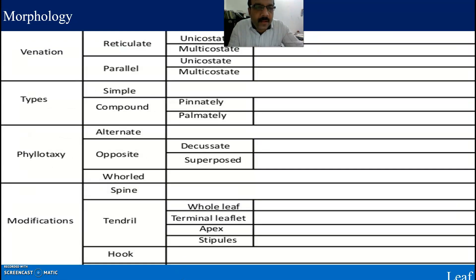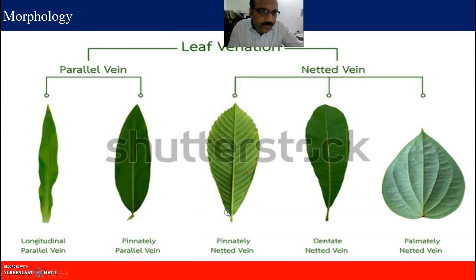To summarize: venation includes reticulate and parallel types. Simple and compound leaves, phyllotaxy types are alternate, opposite, and whorled. Modifications include tendril, hook, and spine. Remember that reticulate venation forms a netted or reticulated pattern of veins.